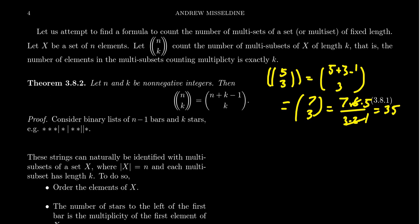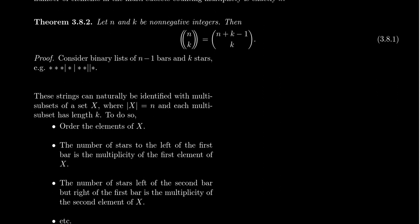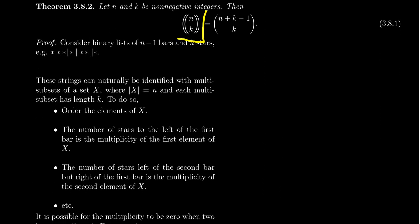That's not itself a proof — it could be a coincidence. But it gives support that what we're counting is correct. In order to prove this, we're going to come up with two different ways of counting the same object and argue that if we counted the same thing twice in two different ways, the two formulas have to agree. We're going to consider binary lists consisting of n−1 bars and k many stars.